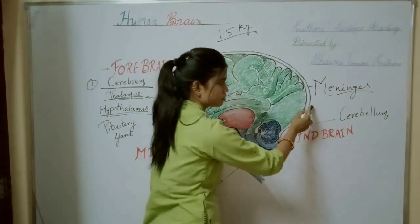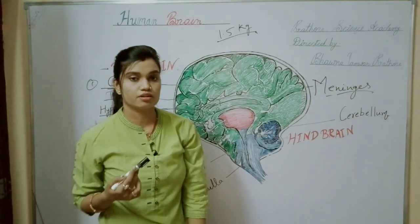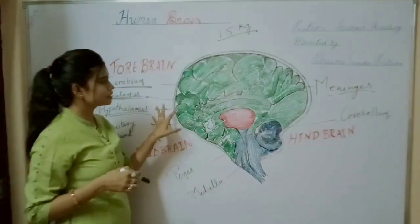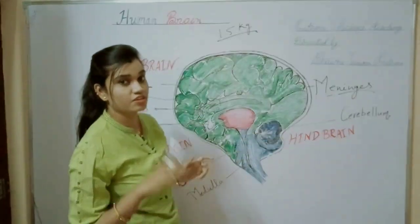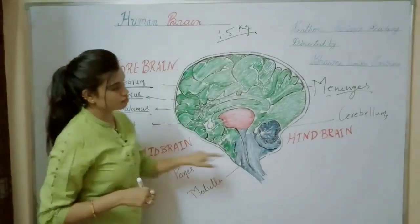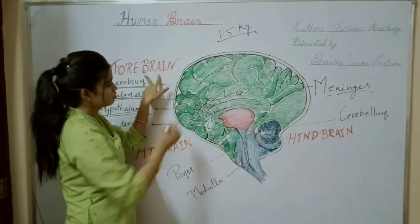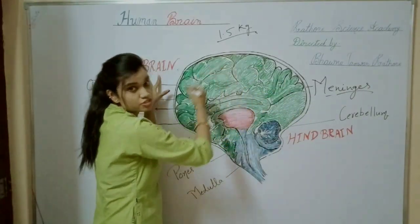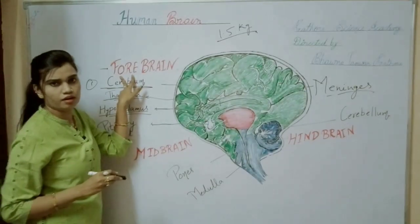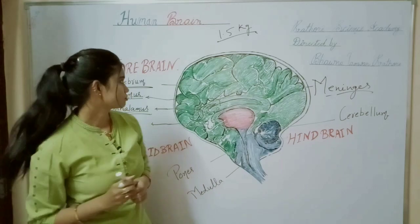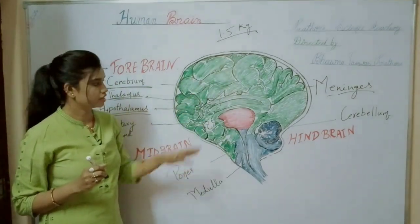If we see the inner structure of the brain, we can see three parts: first is the forebrain, second is the midbrain, and third is the hindbrain. The colorful green part which is totally green in color is known as the forebrain.